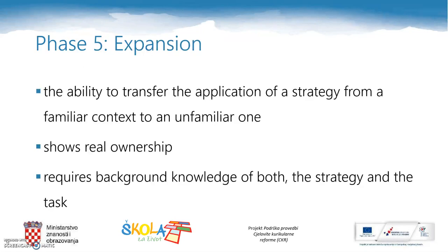A critical component of effective learning strategies use is the ability to transfer the application of a strategy from a familiar context to an unfamiliar context. This phase is called expansion. While it is relatively easy for students to practice and evaluate a strategy when instructed by the teacher, real independence comes from knowing how to choose an appropriate strategy when faced with a new task. Matching a familiar strategy to a new task completes the cycle of strategy instruction, and expanding the use of the strategy to new contexts completes the instructional model. The expansion phase should be included with instruction of all learning strategies.